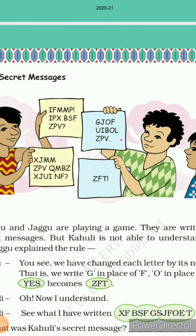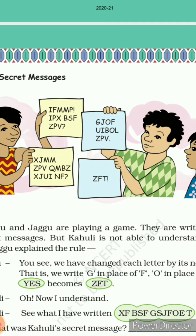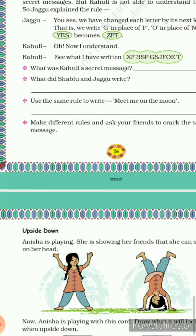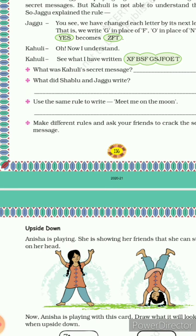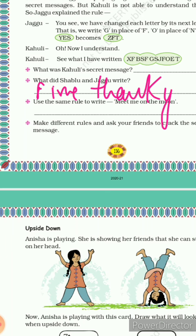Third one is Z P V — yeh ZPV ka bhi hum ne check kiya tha, iska meaning hai Y O U. So aapka poora message ho gaya hai: Fine, thank you. Aap yahan par comma karke likhenge next message ko: Fine, thank you.